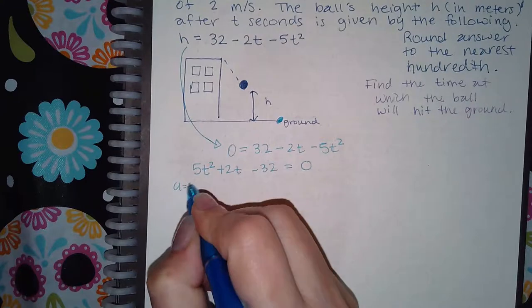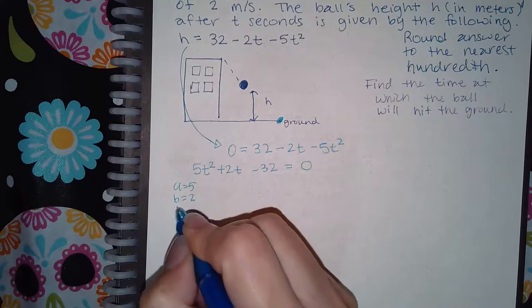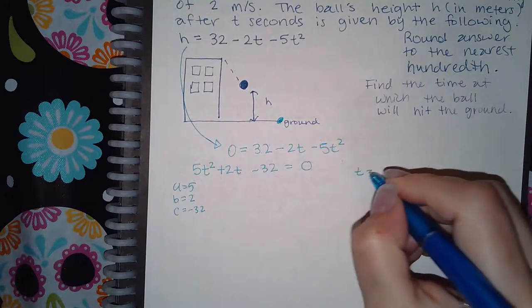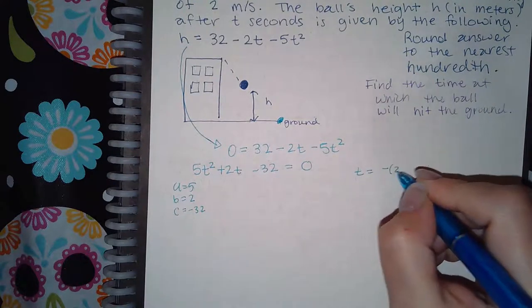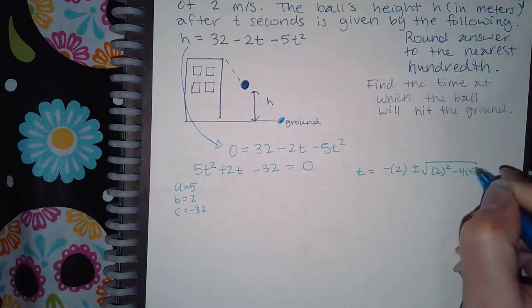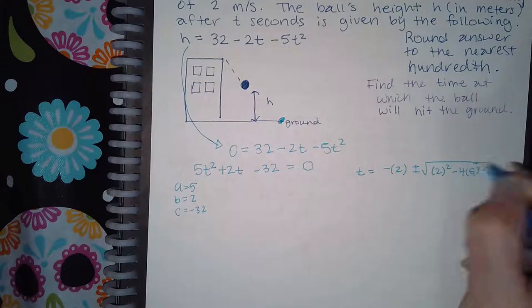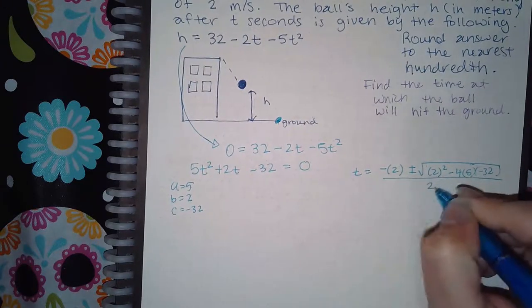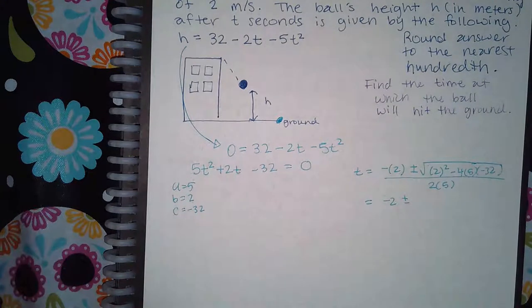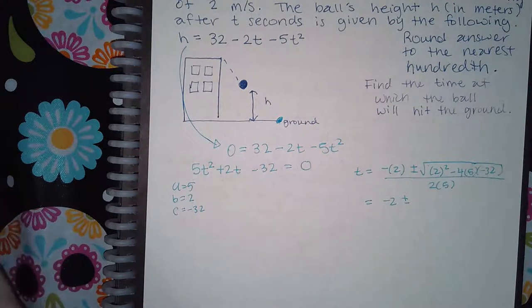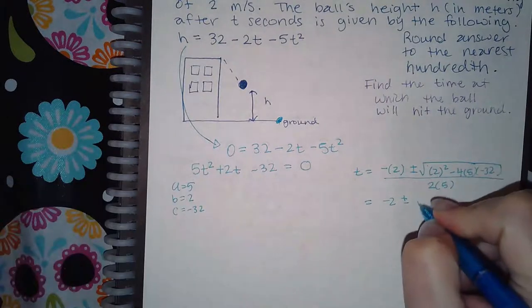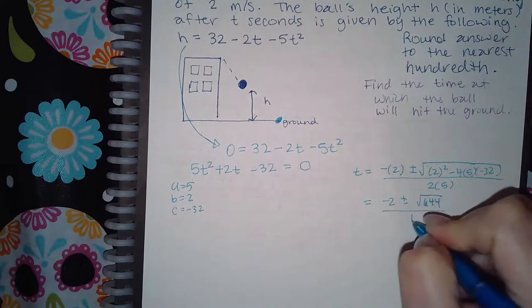My a is 5, my b is positive 2, and my c is negative 32. So I'm going to say t equals negative 2 plus or minus the square root of 2 squared minus 4 times a times c, all over 2 times a. I get negative 2 plus or minus square root of 644 over 10.